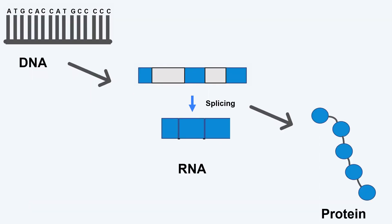Our DNA is made up of the letters A, T, G, and C. Genes provide instructions for our cells to make proteins. To create a protein, DNA is first used as a template to make RNA. Next, RNA is used as a template to make the protein.